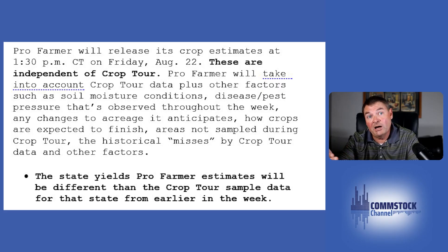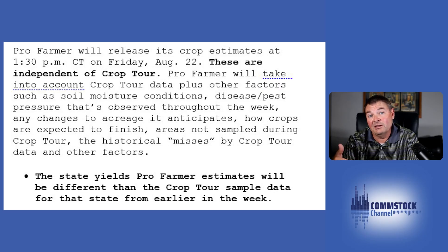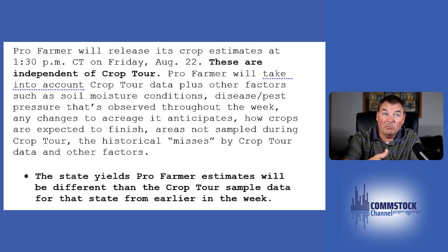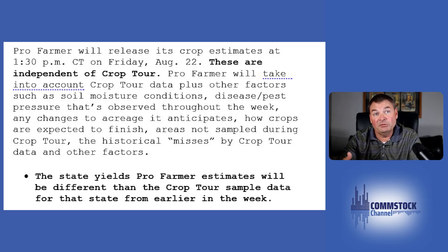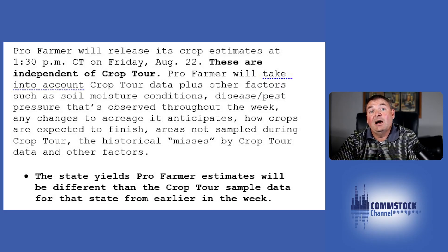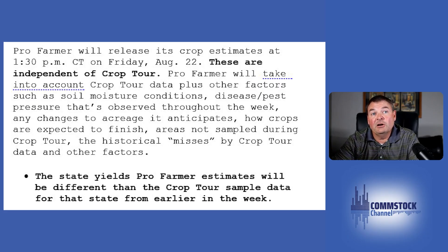The numbers you see for Ohio on Monday evening from the crop tour data will be different from the number Pro Farmer puts on that state for a yield on Friday. On Monday, that's crop tour data — purely going into the field, pulling samples, and averaging all those samples from the state of Ohio. On Friday, Pro Farmer takes that data along with all the other factors and comes up with their yield estimate for the state of Ohio. That is the difference.